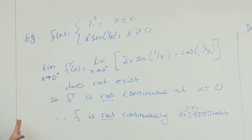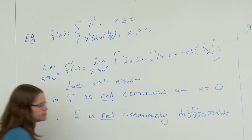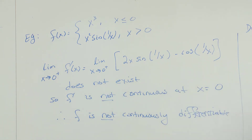If the limit of f′ doesn't exist at a point, then f′ is not continuous there, so f is not continuously differentiable. These definitions — differentiable, differentiable on an interval, continuously differentiable — are similar but subtly different and build on each other, so it's important not to confuse them.